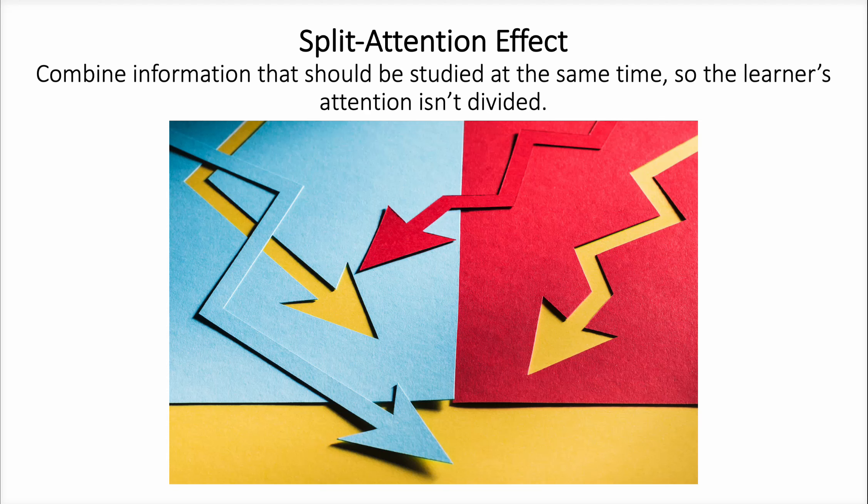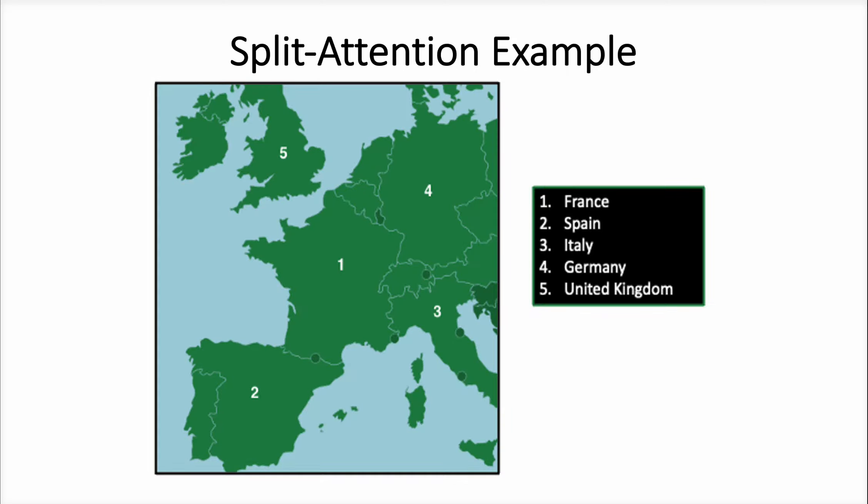To mitigate the split attention effect, instructional designers should focus on presenting information in an integrated manner. So let's look at an example. Here we see a map of Europe. Five countries need to be learned, each labeled with a number. The key on the right lists the numbers with the corresponding European country.